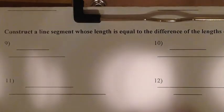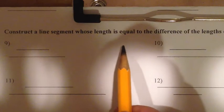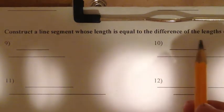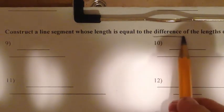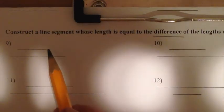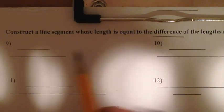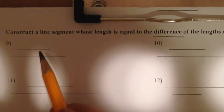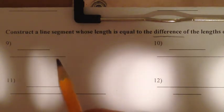For this next one, it says construct a line segment whose length is equal to the difference of the lengths. That means we're going to subtract. Now that's really just like going backwards - instead of adding on and pushing more onto it, we're going to work our way backwards.